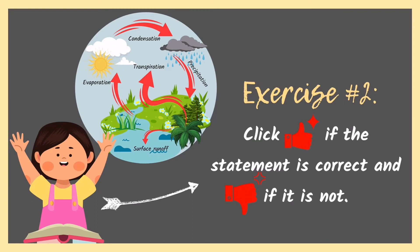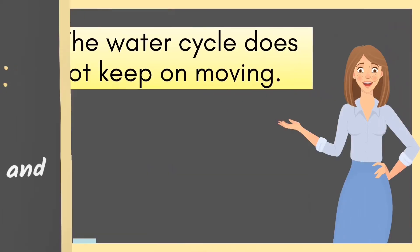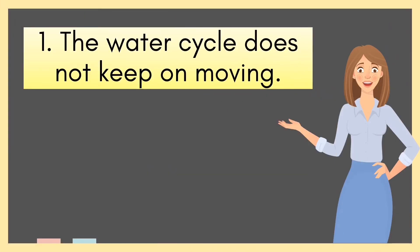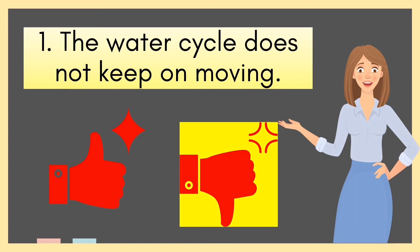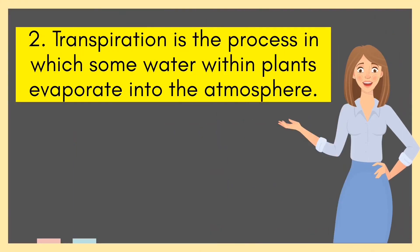Now let's have Exercise 2. Click thumbs up if the statement is correct and thumbs down if it is not. Number 1: The water cycle does not keep on moving — thumbs up or thumbs down? The correct answer is thumbs down. Number 2: Transpiration is the process in which some water within plants evaporates into the atmosphere — thumbs up or thumbs down? The correct answer is thumbs up.